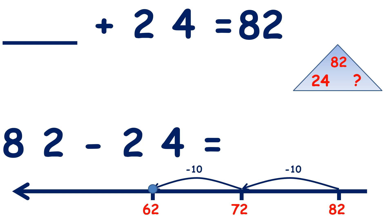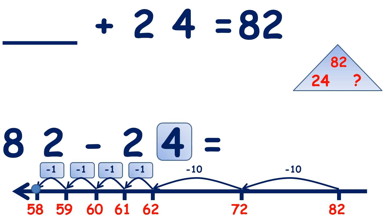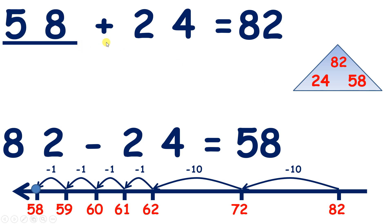Now we need to subtract 4 units. So let's count back 4 from 62: 61, 60, 59, 58. So we've subtracted 4 units to give us our answer 58. So that missing number in our triangle is 58. So 58 plus 24 equals 82.